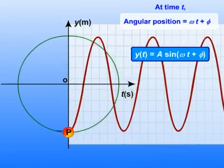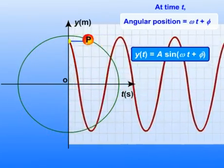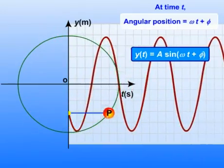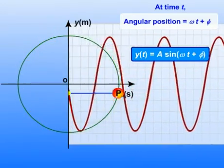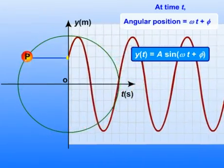What does this show? This shows that if the reference particle P moves in a uniform circular motion, its projection particle P' executes a simple harmonic motion along the diameter of the circle.